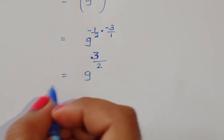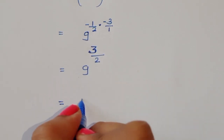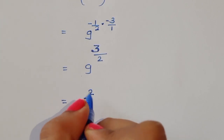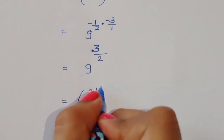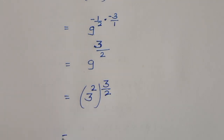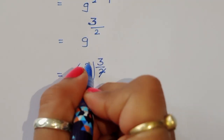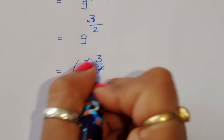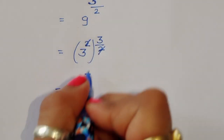Now we have 9 power 3 by 2. We can convert 9 into square form: 9 is 3 squared. So it becomes (3 squared) power (3 by 2). We can cancel the power 2 with the denominator 2, leaving us with 3 power 3.